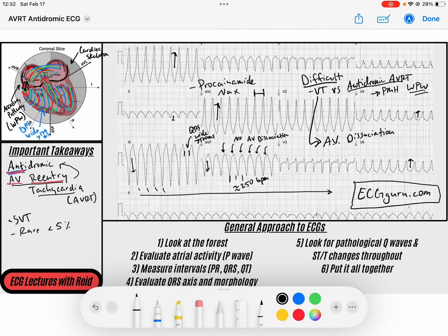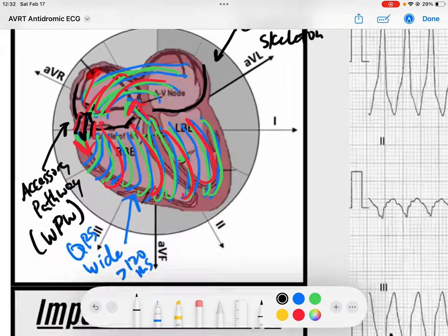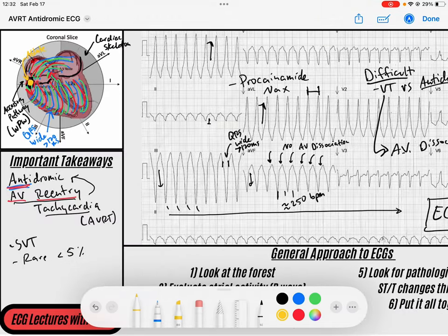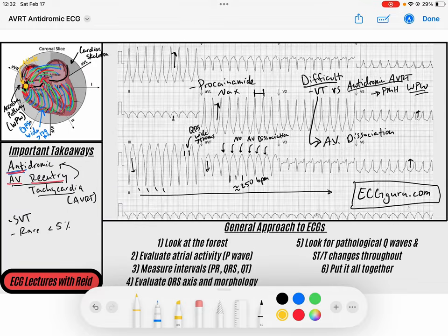But until then, if you have any questions about this, please put them down into the comments below. Obviously, this person has got an accessory pathway. So what's the definitive treatment for them? We're going to ablate it. Radiofrequency ablation. We need to take them to the electrophysiology lab and zap that thing with a little radiofrequency ablation.